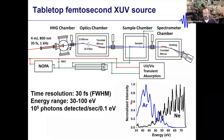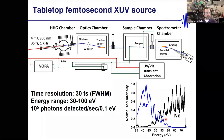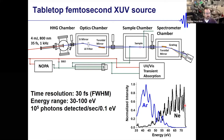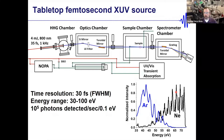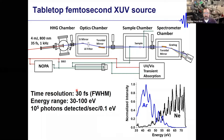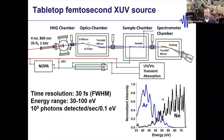In practice, we get broad continua — using argon gives lower-energy photons, neon gives higher-energy photons up to about 100 eV in our current system. You'll notice spikes at odd harmonics of the driving laser field — I'm a chemist, so I treat this as a white-light continuum. We get about 30 femtosecond time resolution and detect roughly 10⁵ photons per second in every 0.1 eV energy bin at the detector. This is many orders of magnitude lower flux than a synchrotron, but we avoid significant X-ray beam damage.